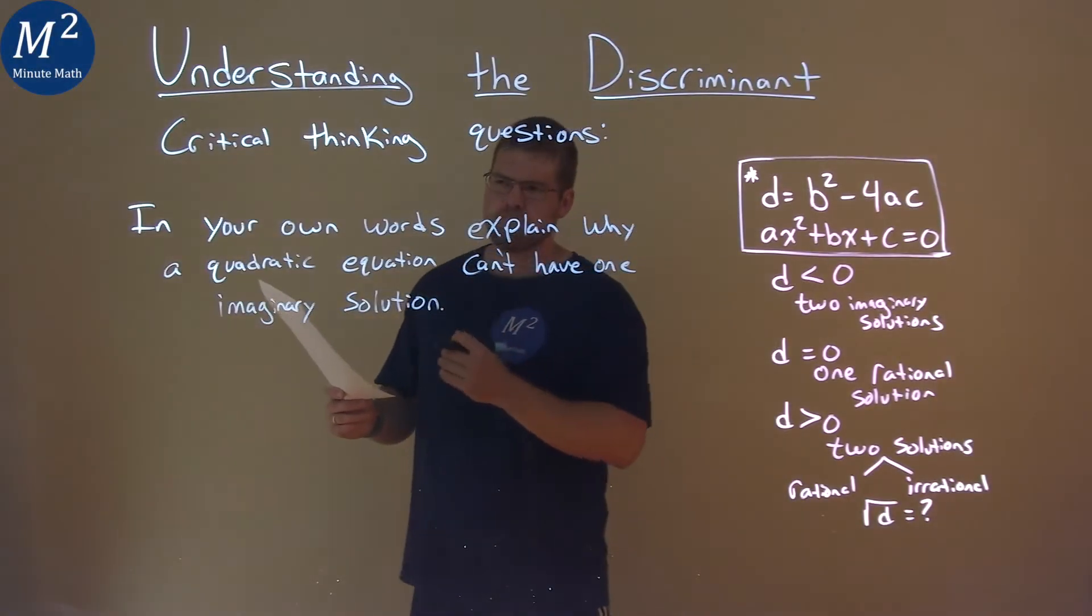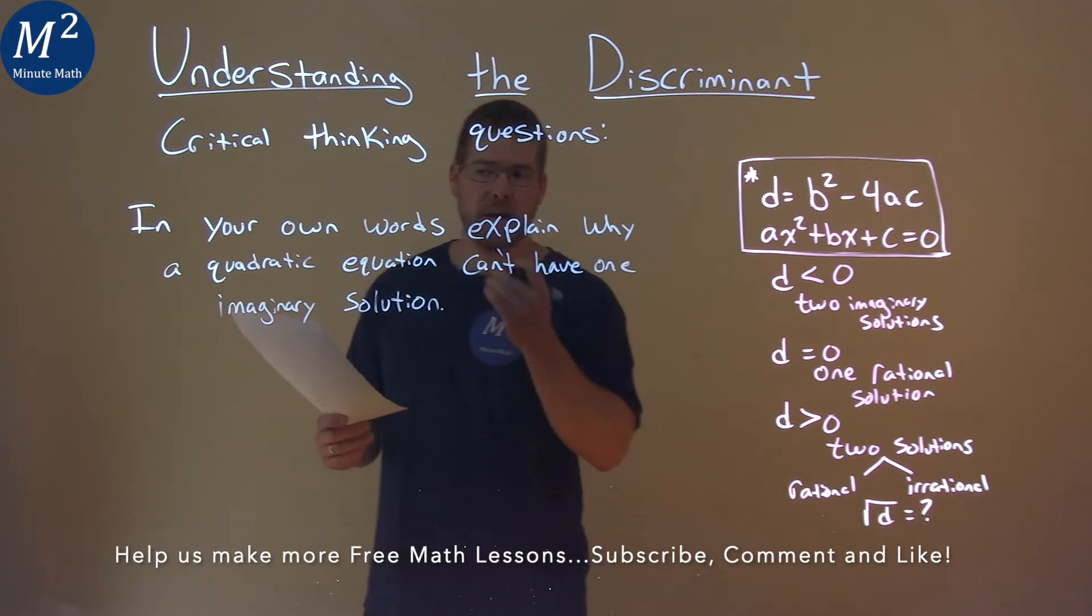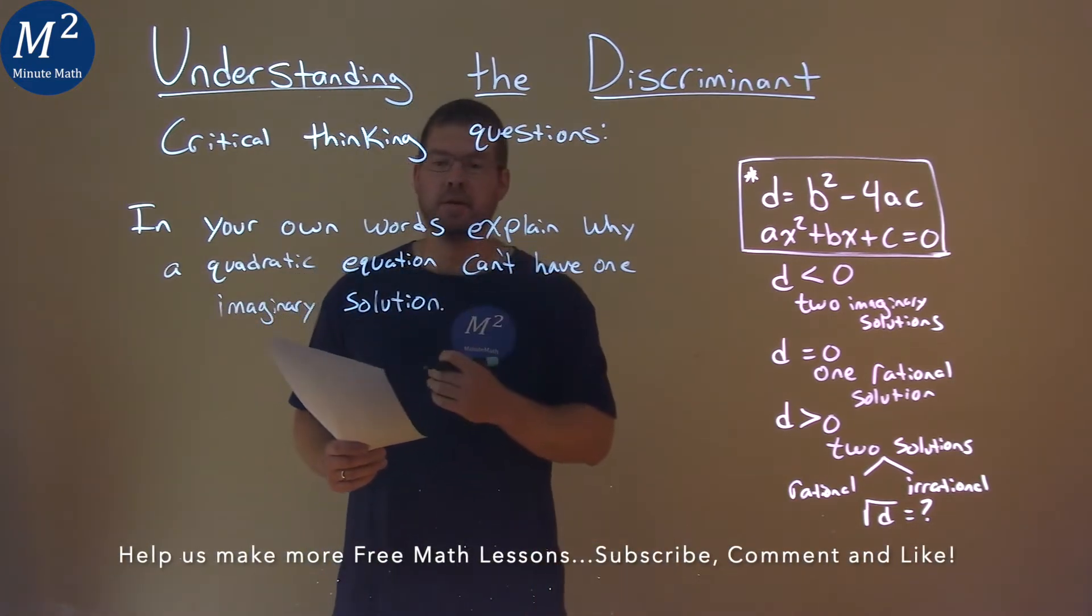We're given this question. In your own words, explain why a quadratic equation can't have one imaginary solution.